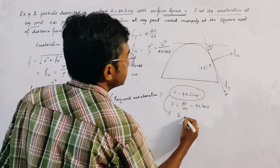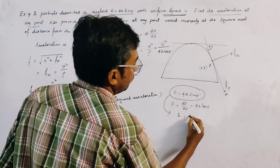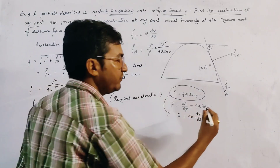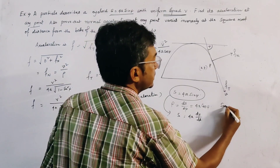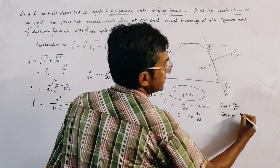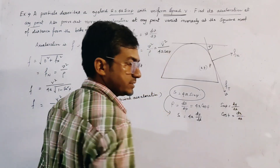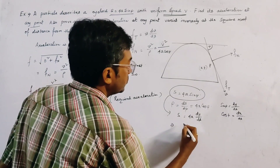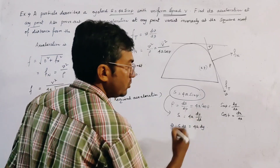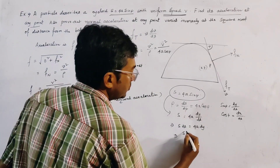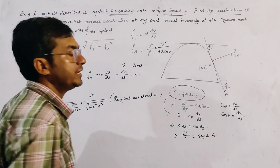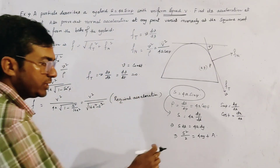Now, we use the relation s = 4a dy/ds — because in differential calculus, sin ψ = dy/ds and cos ψ = dx/ds. So we get s ds = 4a dy. Integrating both sides gives s²/2 = 4aY + K, where K is the constant of integration.